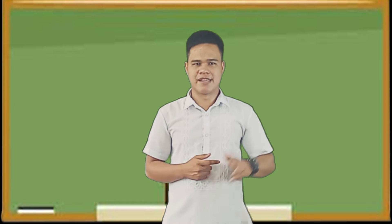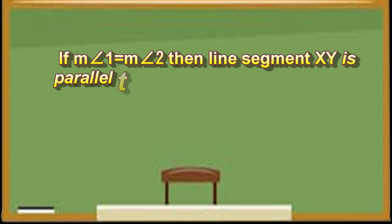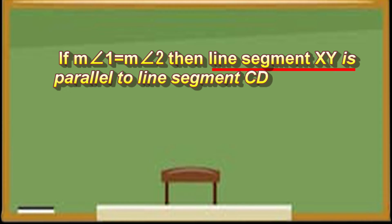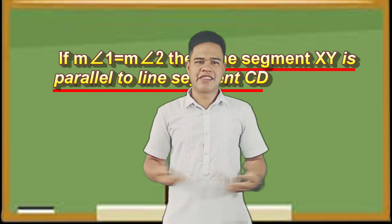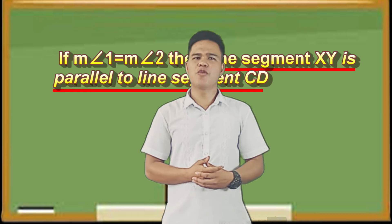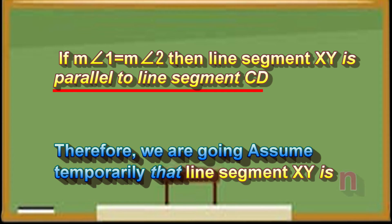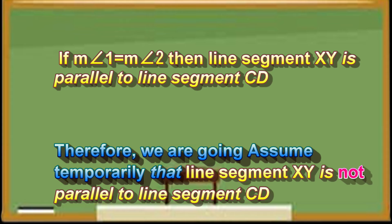Example number 3: If measure of angle 1 equals measure of angle 2, then line segment XY is parallel to line segment CD. So the conclusion is line segment XY is parallel to line segment CD. The same method, we are going to assume temporarily that line segment XY is not parallel to line segment CD.